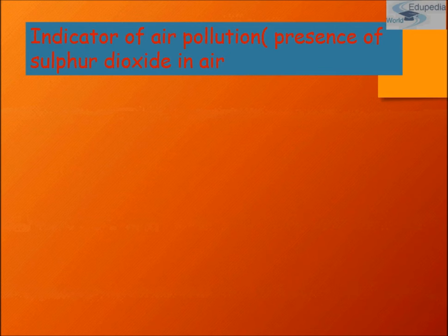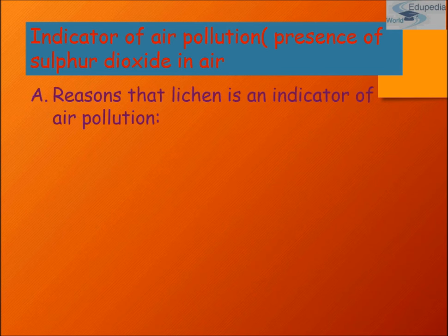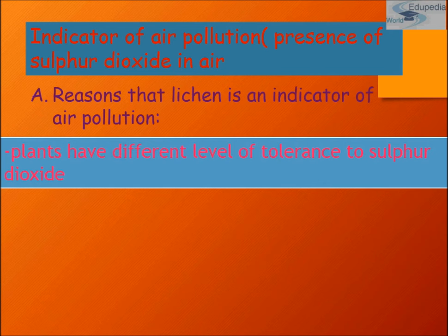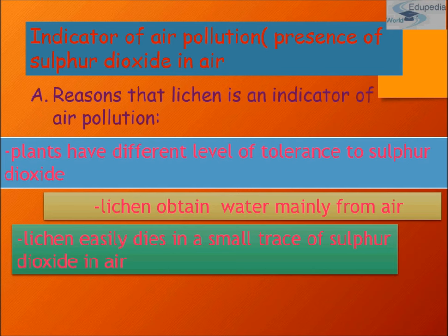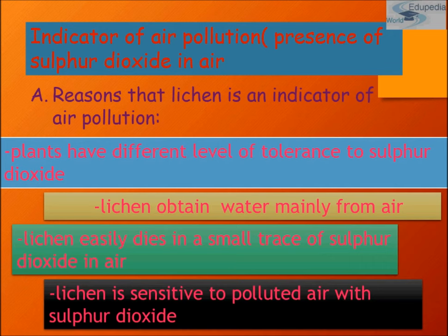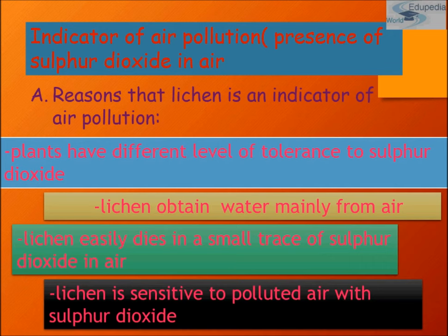Lichens are indicators of air pollution — specifically the presence of sulfur dioxide. The reason is that lichens have different levels of tolerance to sulfur dioxide. They obtain water mainly from air and easily die in even small traces of sulfur dioxide. So lichens are sensitive to polluted air containing sulfur dioxide. This concludes the topic — thank you and keep watching Edupedia World videos.